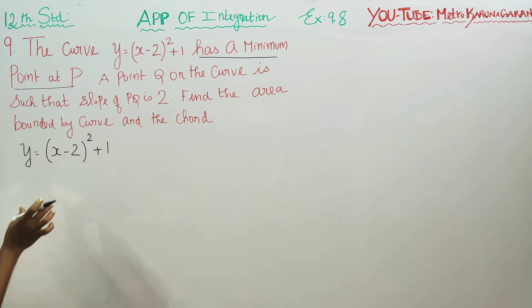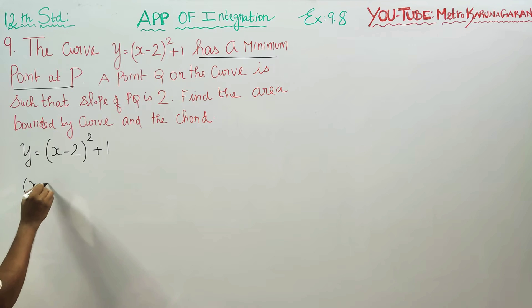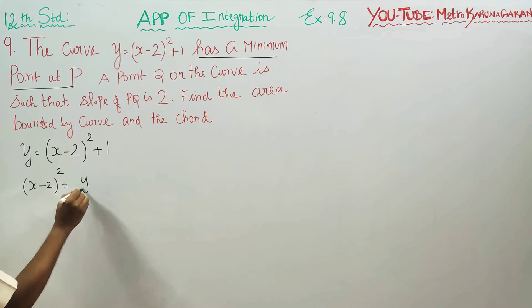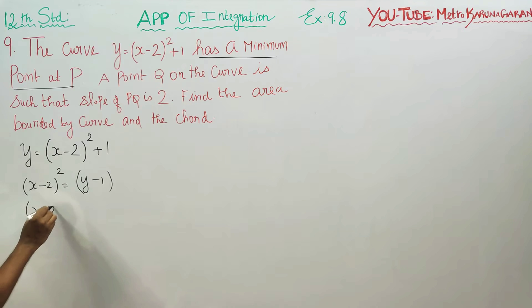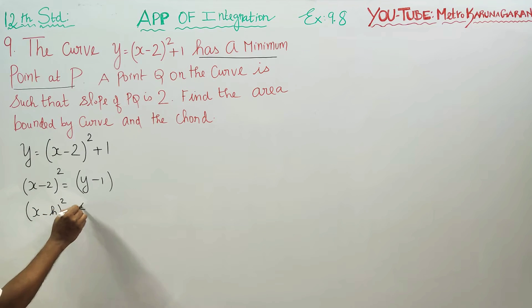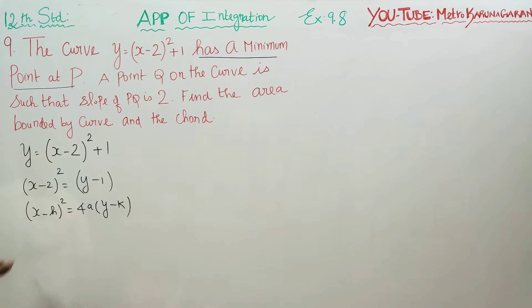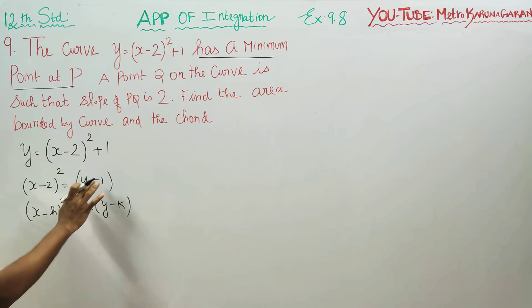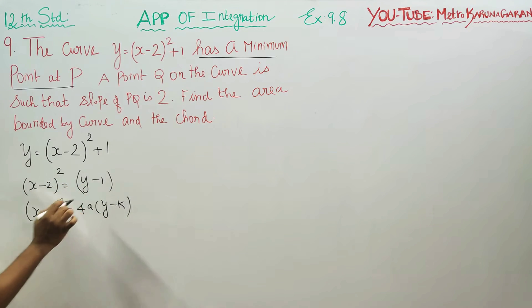This is an equation of a parabola. We rewrite it as x minus 2 whole square is equal to y minus 1. Comparing with the standard form x minus h whole square is equal to 4a into y minus k, here 4a is equal to 4 into 1/4, giving us the parabola form.